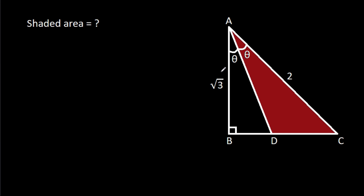In this video, we have been given that AB is √3, AC is 2, angle BAD is theta, angle CAD is theta, and we have to find the shaded area.